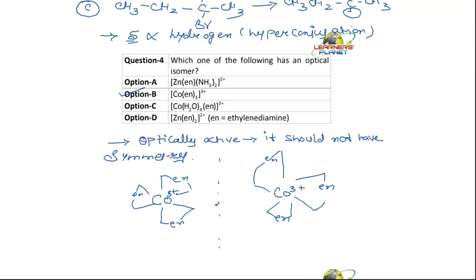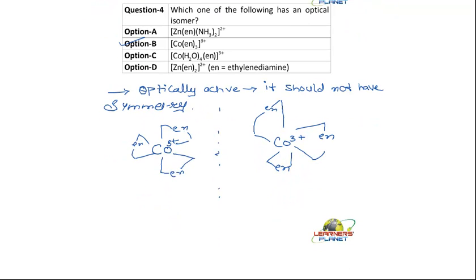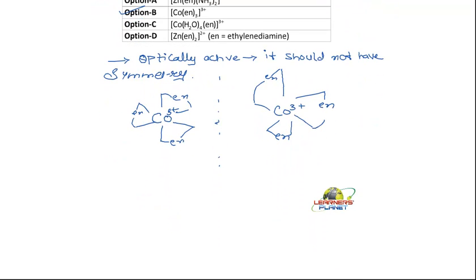Now let's take this out—so this is your answer. But let's work out the other options. Say option B: zinc ethylenediamine and ammonia. What will be the structure? This is your option B, which was correct—it is optically active. Now students, if I take up the first option, that is A.